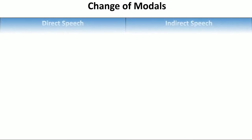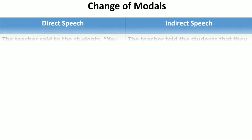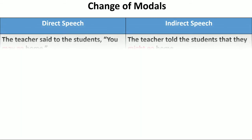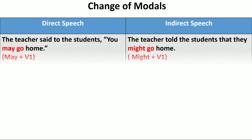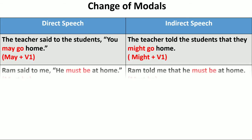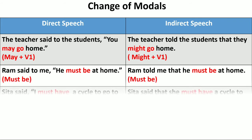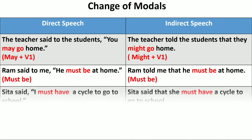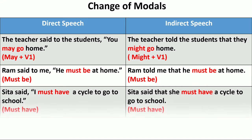Change of modals — some more examples. 'The teacher said to the students you may go home' becomes 'The teacher told the students that they might go home.' May + V1 is changed to might + V1. 'Ram said to me he must be at home' becomes 'Ram told me that he must be at home' — must remains must, no change. 'Sitha said I must have a cycle to go to school' becomes 'Sitha said that she must have a cycle to go to school' — must have remains must have, no change in indirect speech. Remember it.